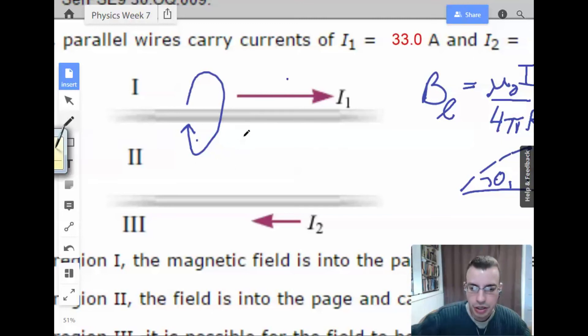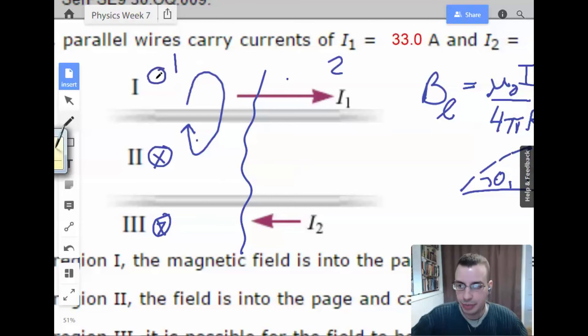So for wire one here, we're going to have a magnetic field that wraps around this direction. So at this point right here, this section will be one, this section will be two. So over here, we're going to have it going into the board. And this is for wire one. And then for here, it's going to be coming out of the board.